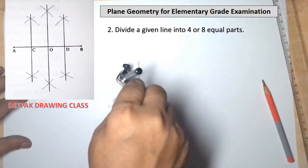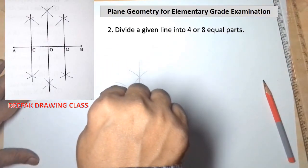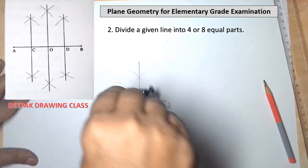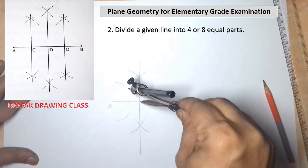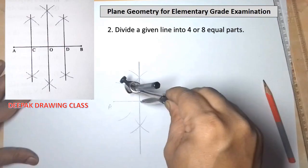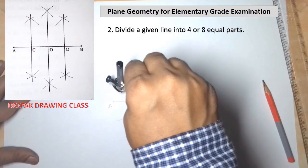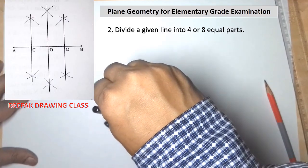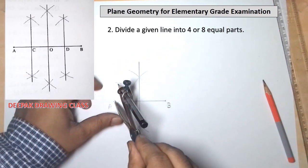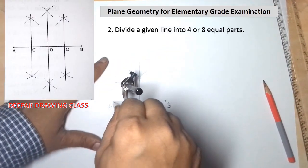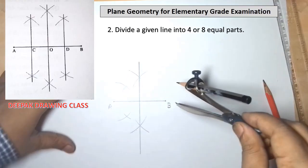draw arcs on both the sides of line AO. Also repeat the same from the point O by drawing arcs on both the sides of line AO.